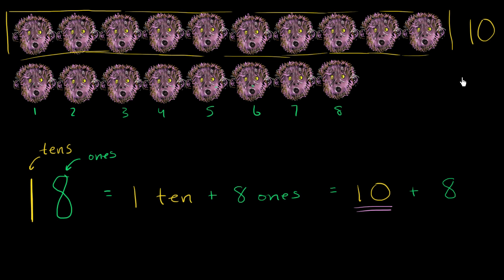So we started with 10. We added 8 more monkeys to get to 18. And once again, how did we first think about that? Well, 18 is 1 ten plus 8 ones, or 10 plus 8.